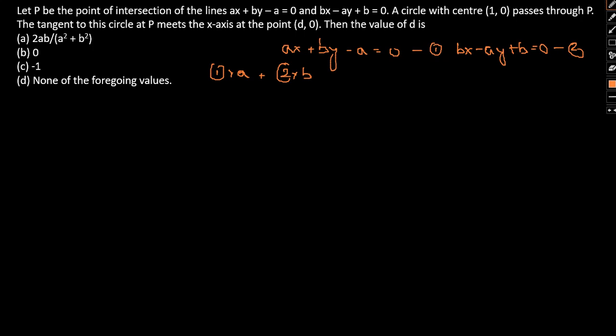So what we get is A squared X plus B squared X equal to A squared minus B squared. Therefore, X can be given by A squared minus B squared divided by A squared plus B squared.